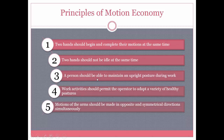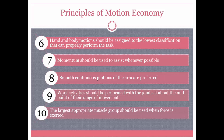The fifth principle states that motions of the arms should be made in opposite and symmetrical directions simultaneously. Principles six, seven, and eight relate to Newton's Laws of Physics. The sixth is that hand and body motions should be assigned to the lowest classification that can properly perform a task — for example, using just a fingertip rather than the whole palm to push a button. The seventh is that momentum should be used to assist whenever possible. The eighth is that smooth, continuous motions of the arm are preferred, since a body in motion tends to continue in motion, making continuous movement easier than sharp, sudden movements.